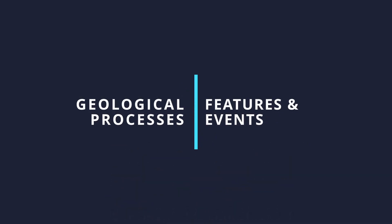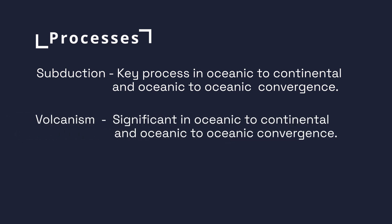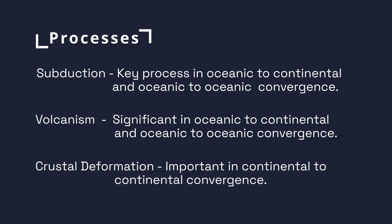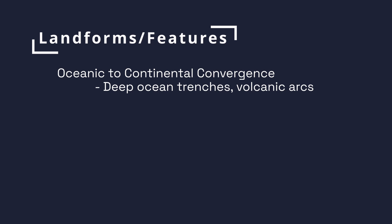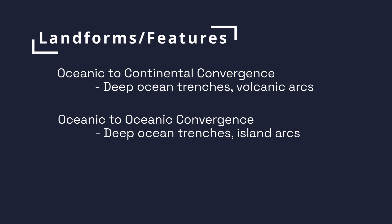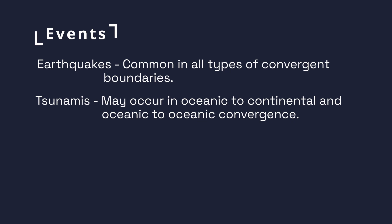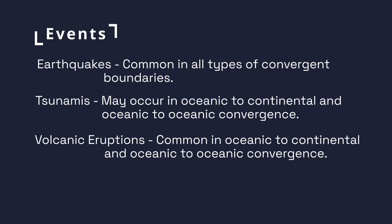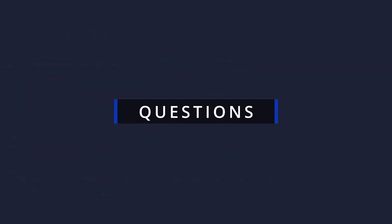To summarize the geological processes, features, and events: Subduction is the key process in oceanic-to-continental and oceanic-to-oceanic convergence. Volcanism is significant in oceanic-to-continental and oceanic-to-oceanic convergence. Crustal deformation is important in continental-to-continental convergence. Landforms formed include deep ocean trenches and volcanic arcs for oceanic-to-continental; deep ocean trenches and island arcs for oceanic-to-oceanic; and high mountain ranges for continental-to-continental. Earthquakes are common in all types; tsunamis may occur in oceanic-to-continental and oceanic-to-oceanic; volcanic eruptions are common in oceanic-to-continental and oceanic-to-oceanic; and mountain building is prominent in continental-to-continental convergence.